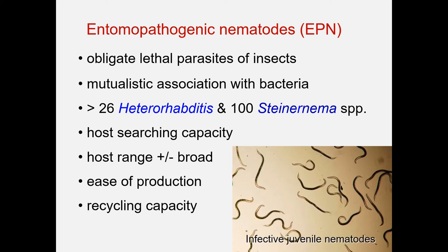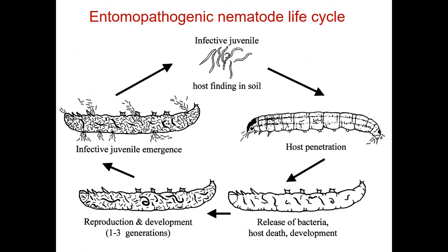A little bit of background on these nematodes. In nature, they're obligate lethal parasites on insects. They have a symbiotic relationship with certain bacteria, very specific. There are well over 100 species that fall into the genus Heterorhabditis or Steinernema. They have different behaviors to actively go after hosts and find them. Host range varies from some species being pretty broad to some rather specific. They can be easily mass-produced either in insects or in the billions using fermenters. In nature, they have the ability to recycle in their hosts and give potentially some long-lasting effects.